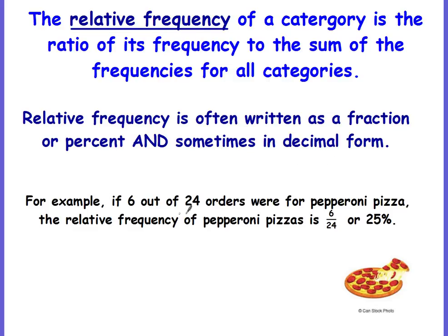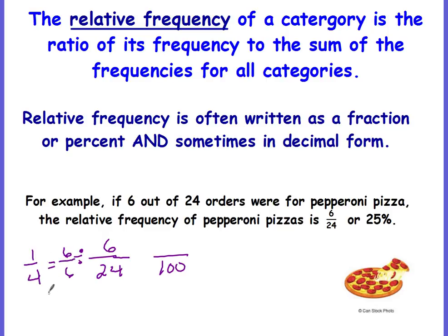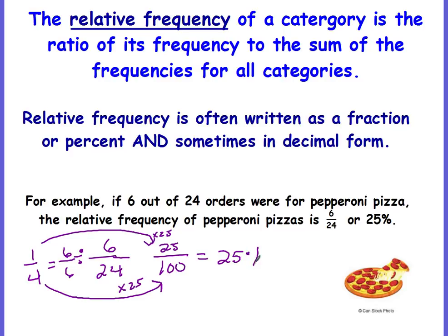For example, if 6 out of 24 orders were for pepperoni pizza, then the relative frequency of pepperoni pizzas is 6 to 24, or 25 percent. To convert to a percent, we need to change the denominator to 100. We simplify by dividing both numerator and denominator by 6, giving us a 1 to 4 ratio. Then 4 goes into 100 using a scale factor of times 25 — multiply 1 by 25 as well — and you get 25 out of 100, which is 25 percent.